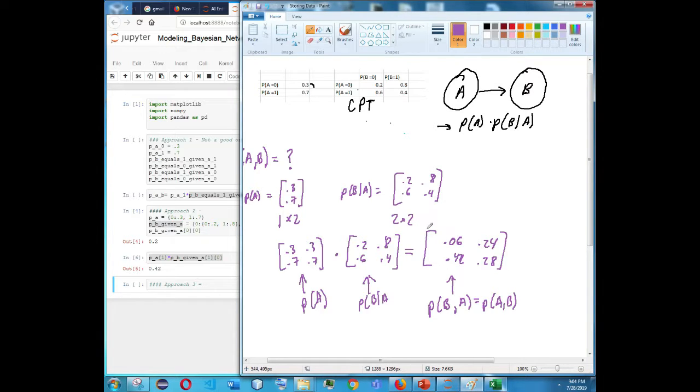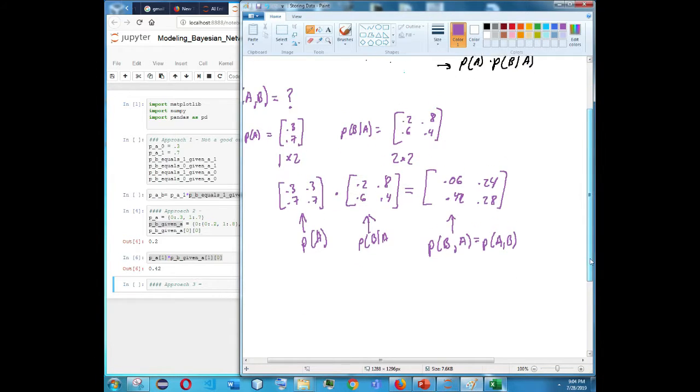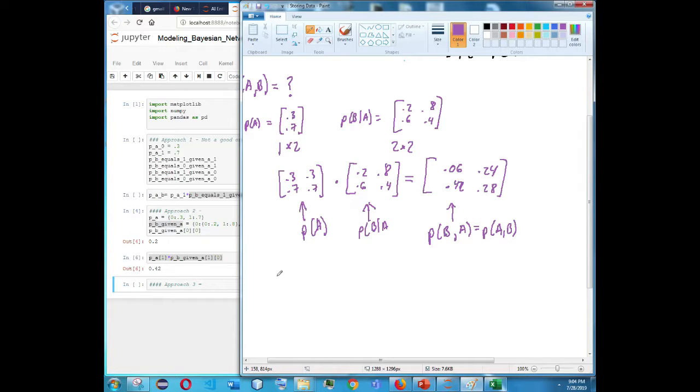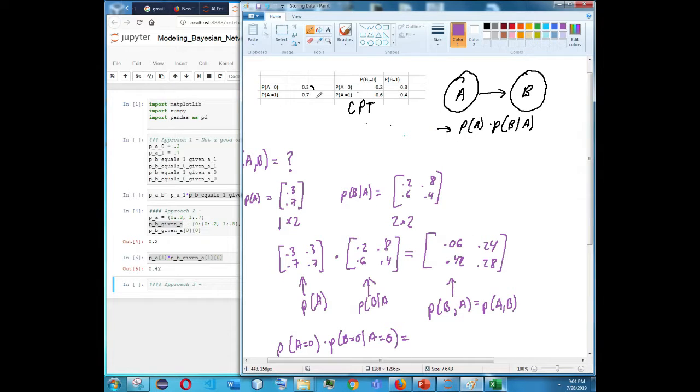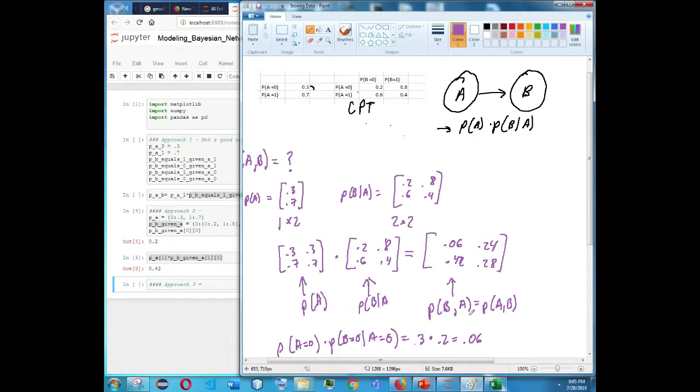So for example, looking at our table above here, A equals 0, B equals 0. If I were to look at the first row and the first column, I would get 0.06. Now is that true? Let's find out. So what we're trying to find is P of A equals 0 times P of B equals 0 given that A equals 0. So A equals 0 is 0.3, then we have B of 0 given A equals 0. Looking at the table, it's 0.2, and you'll get surely 0.06.